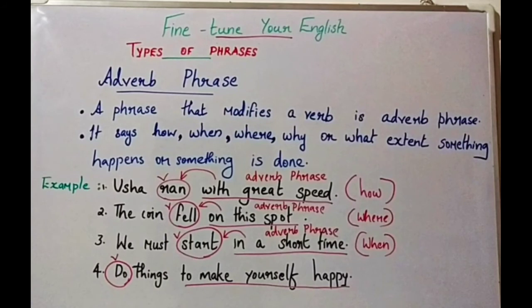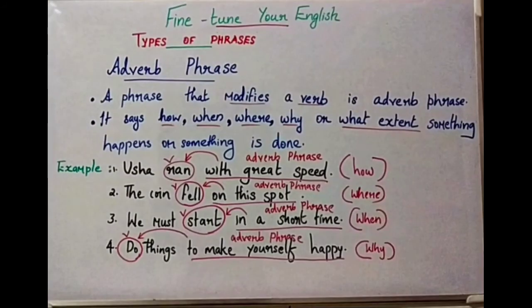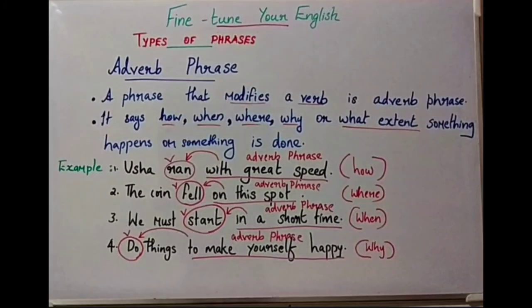The last example given here: Do things to make yourself happy. Here, 'to make yourself happy' is the Adverb Phrase, and it says something more about the verb 'do.' It answers the question: why do you do things? The answer is 'to make yourself happy' — that answer is the Adverb Phrase.